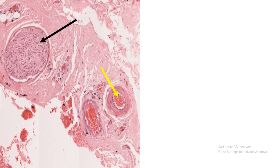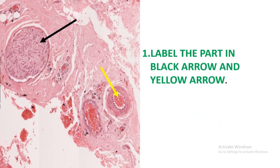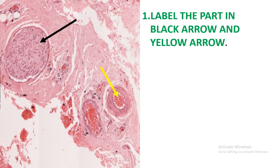In our first question we have been given this slide. The first question is: label the part indicated by black arrows and yellow arrows. If you look at the part indicated by the black arrow, this is just the nerve. We say it's a nerve because it has no lumen.